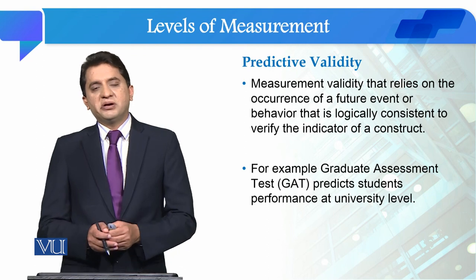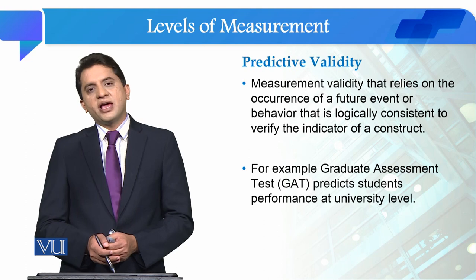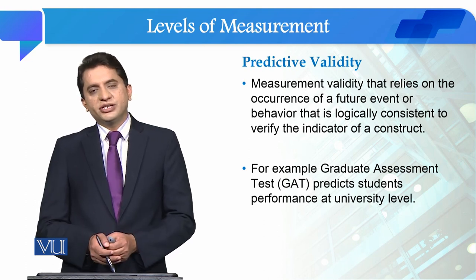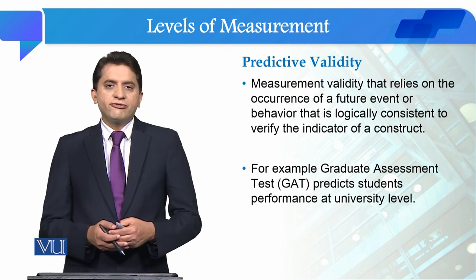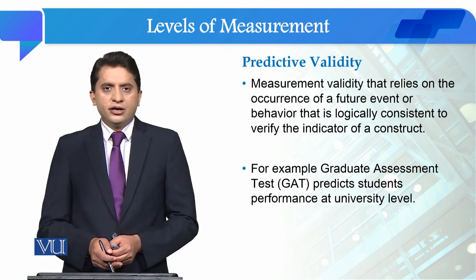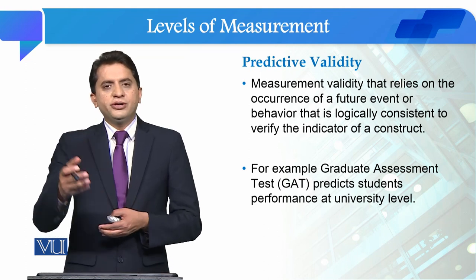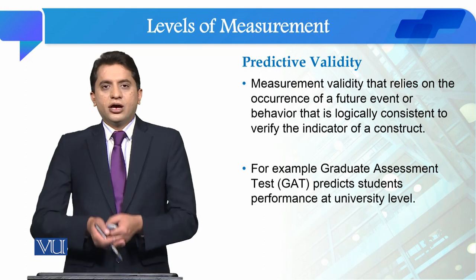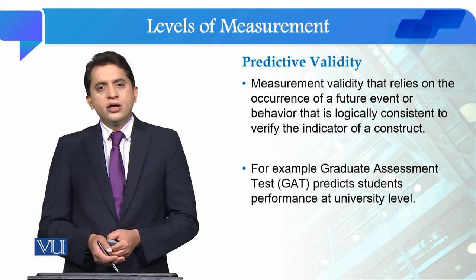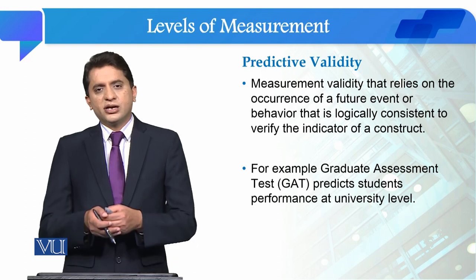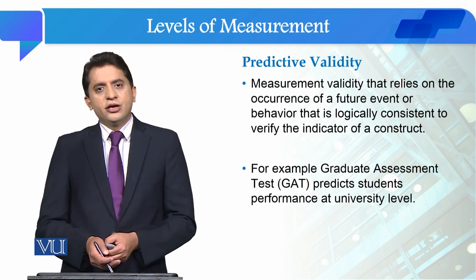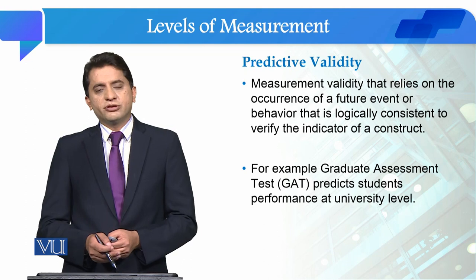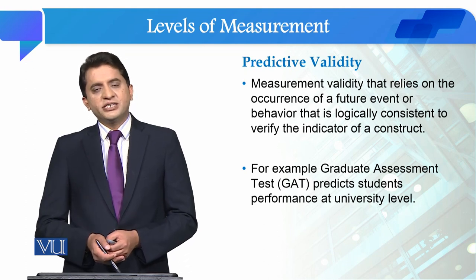Another example: when you apply abroad and your English ability is checked through the IELTS test. If your IELTS score is high, then the possibility of getting a visa is high. If your IELTS score is low, then the possibility of getting a visa is low. If you have passed IELTS, you can submit your visa application. This way, future behavior is predicted — that is predictive validity.